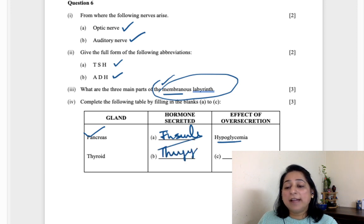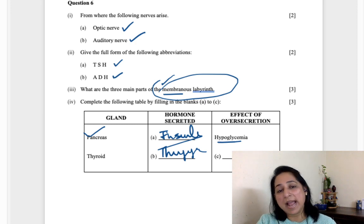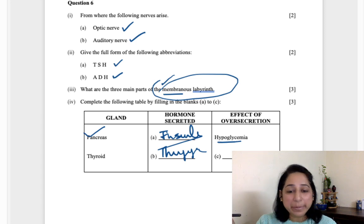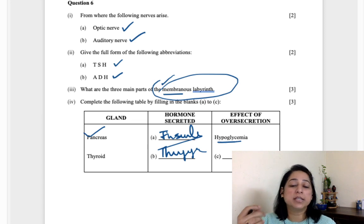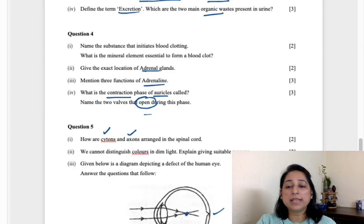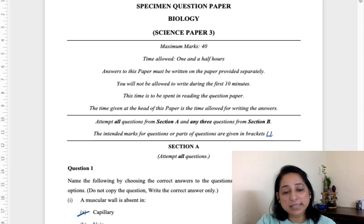The effect of over secretion of thyroxine is hyperthyroidism in which the basal metabolism of a person increases or enhances and the person is unable to even sleep and becomes very very active. So this is all about your sample paper, the sample paper which was lately uploaded by ICSE when your semester two date sheets and all were announced.